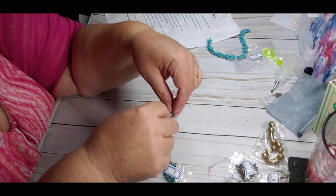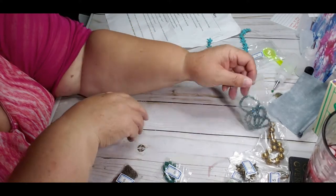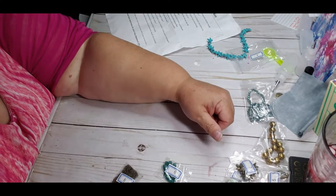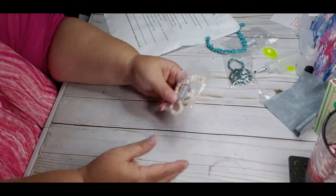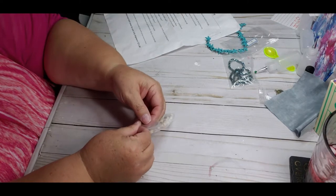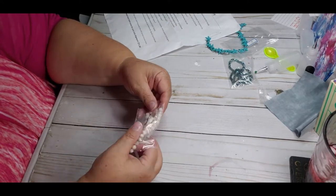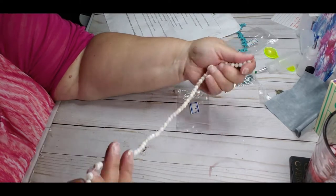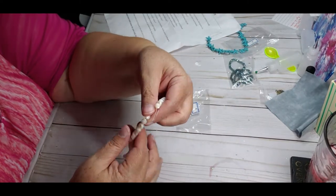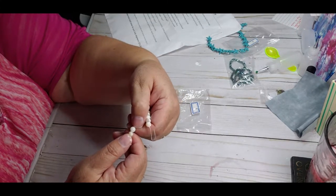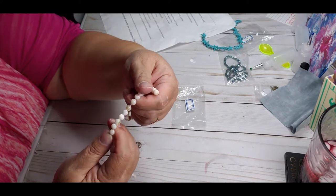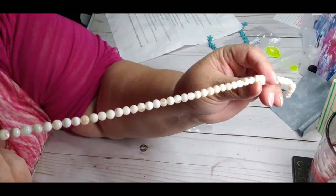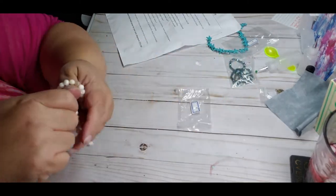Number four is a 15 and a half inch strand, six millimeter mother of pearl shell round beads. That would be nice. So this is 15 and a half inch strand, six millimeter, mother of pearl shell round beads. Brown in there. Alright.